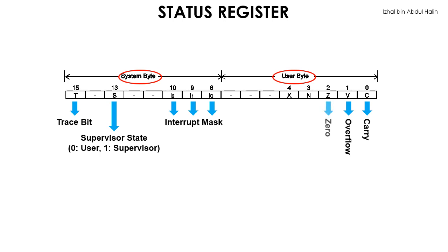Bit 2 is the zero flag. Its value changes to 1 when an arithmetic or logic instruction result is 0. Bit 3 is the negative flag; its value changes to 1 when an arithmetic operation results in a negative value. Finally, bit 4 is the extend flag. Its state changes with conditions that are similar to the carry flag.